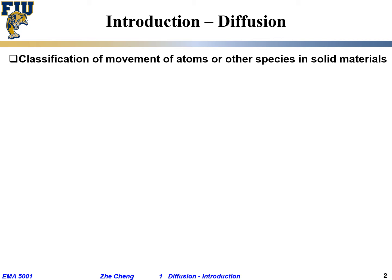Before we go into diffusion and talk about the concept and classification, we want to first talk about the movement or motion of atoms or other microscopic species in solid material. Generally, you can classify the motion or movement of atoms or other species within a material into two categories.